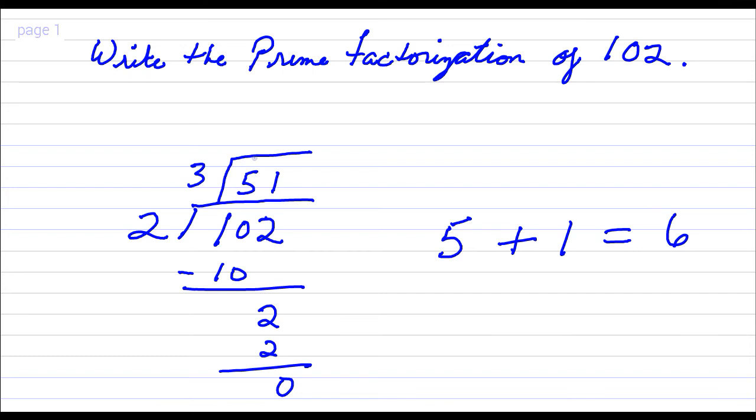51 divided by 3 is 17. And I'm done with this factorization because 17 is prime. So 102 is the product of 2 times 3 times 17.